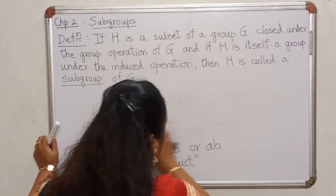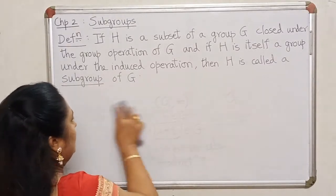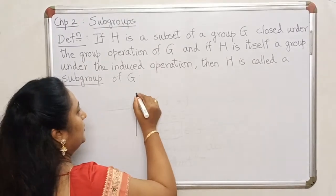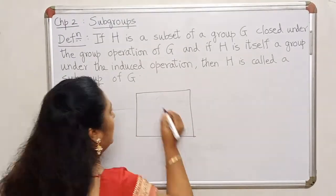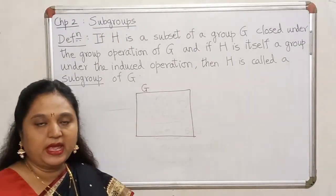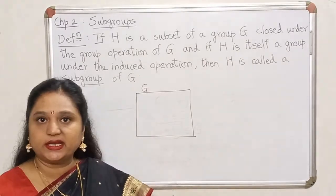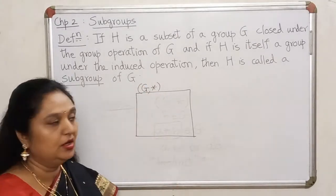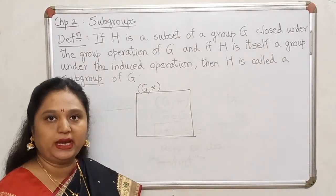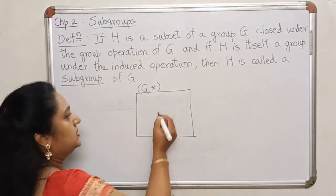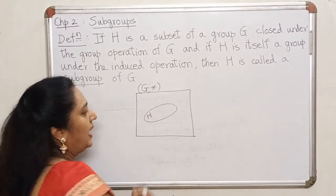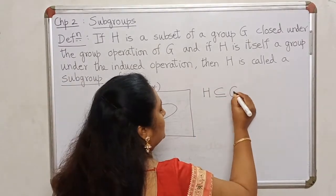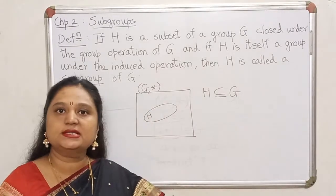Let us now come to the definition of a subgroup. This picture should help. Suppose I have a group G. As noted, when I say G is a group, it is understood that there is some binary operation in mind on G. Now suppose I take H to be a subset of G.